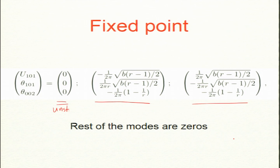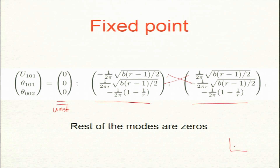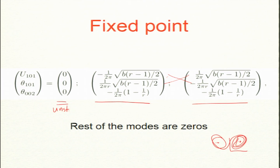One solution is all zeros which becomes unstable, while other modes become stable. The parameter b goes as square root of (r−1). There are two choices — you can change the sign — so there are two solutions, just as in the Lorenz butterfly picture where trajectories hit either one fixed point or the other. There are only two solutions, not four.